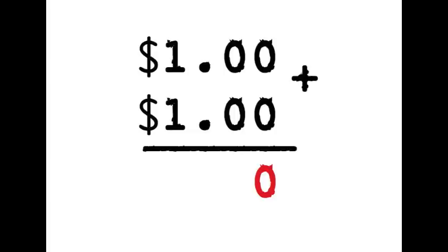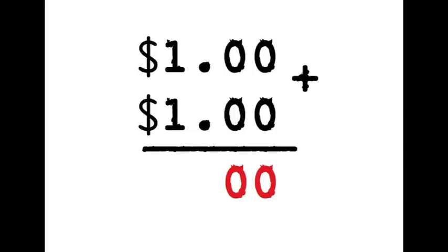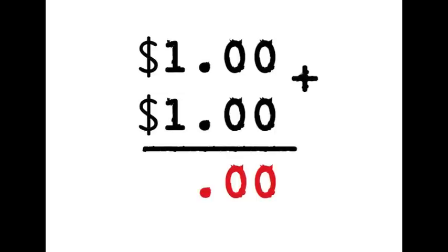Let's add some dollars using decimal points now. One dollar plus one dollar. First, we add up the cents column — it's zero. Another zero. Then we put the decimal point below the other decimal points. And finally, one plus one equals two. One dollar plus one dollar is two dollars.